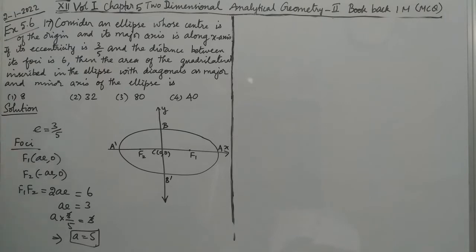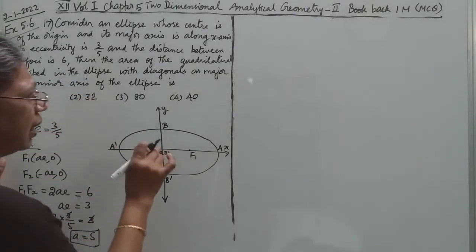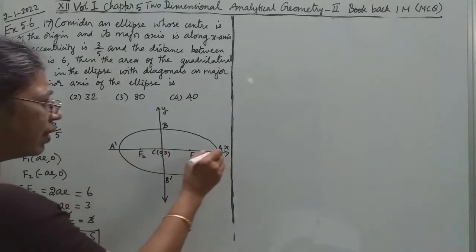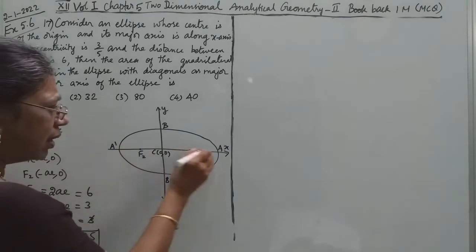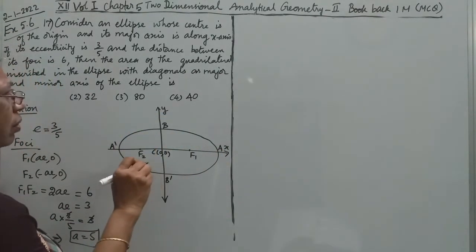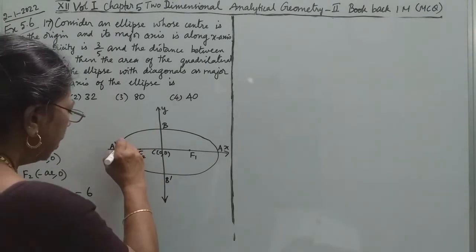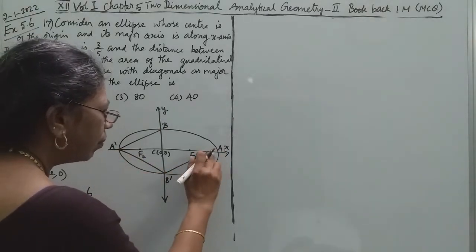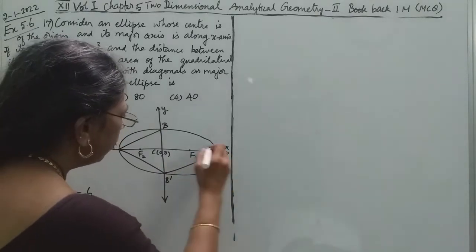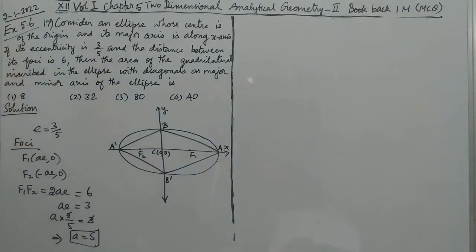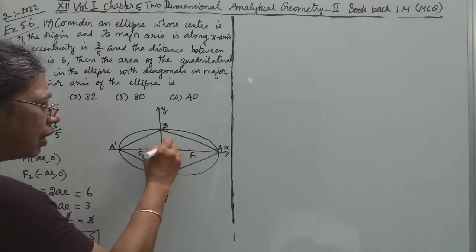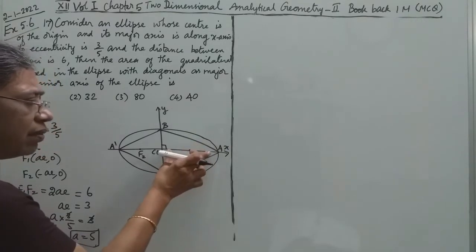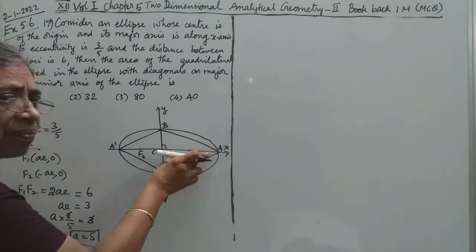With the help of that e. Now we need the area of the quadrilateral inscribed in the ellipse with diagonals as major and minor axis. Now diagonals: major axis AA' is a diagonal, BB' is a diagonal. And this inscribed quadrilateral, this is a quadrilateral.